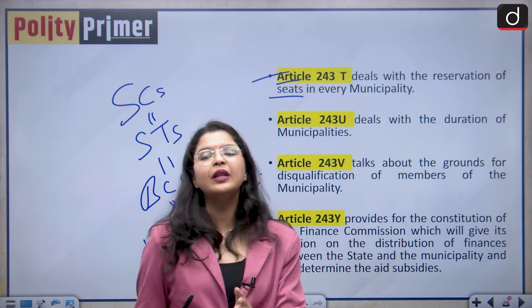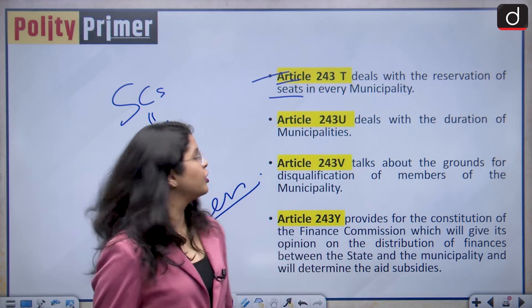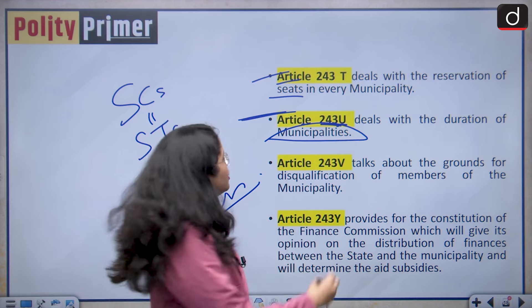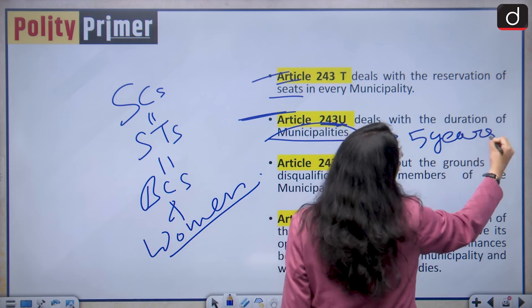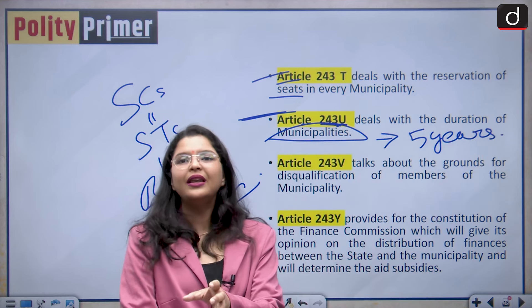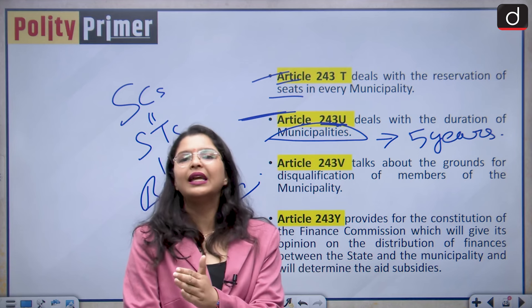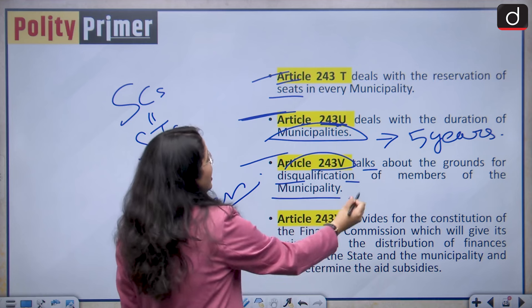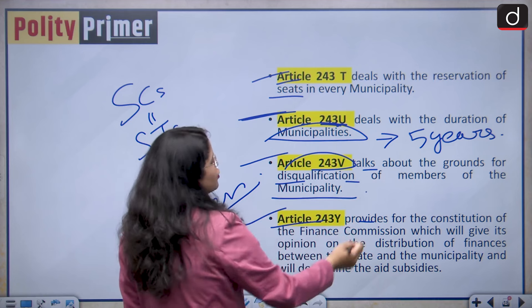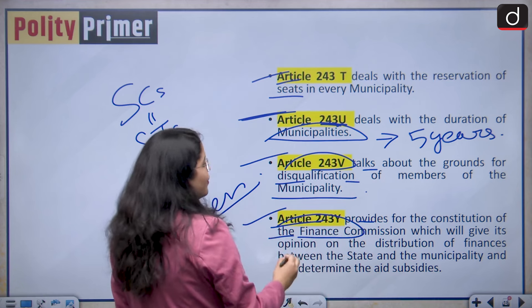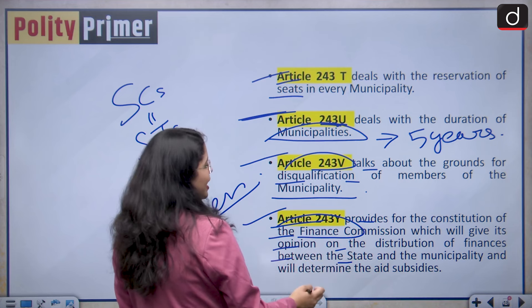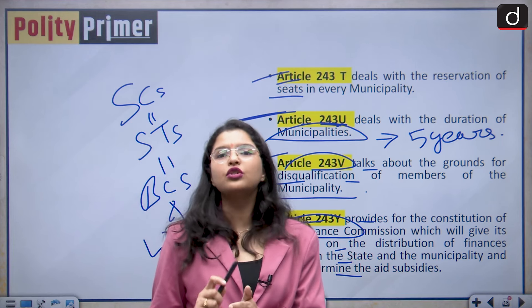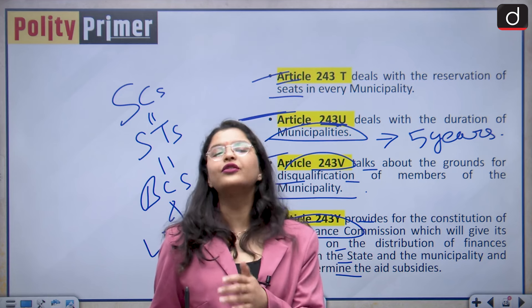Reservation is not only at the Panchayat level but also in urban local self-government institutions. Article 243-U deals with the duration of municipalities — the normal duration is 5 years, but it can be dissolved earlier and the new municipality elected will continue to serve for the remaining term. Article 243-V talks about the grounds for disqualification of members of municipality. Article 243-Y provides for the constitution of the state finance commission, which will give its opinion on the distribution of finances between the state and the municipality and will determine the aid and subsidies.